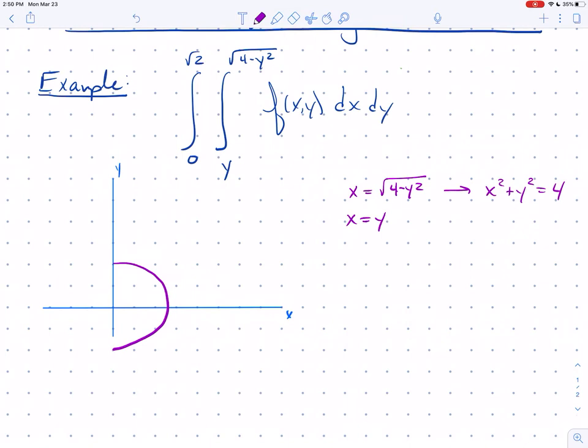We can begin by graphing that. Each square here is length 2, something like that. Then y equals x, we'll just draw it right like that. You can see from the cut here that x is going from y over to the circle.